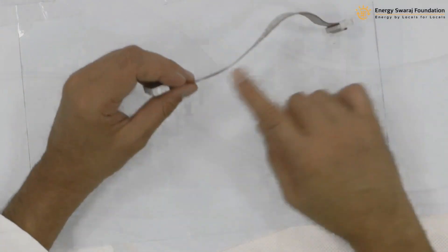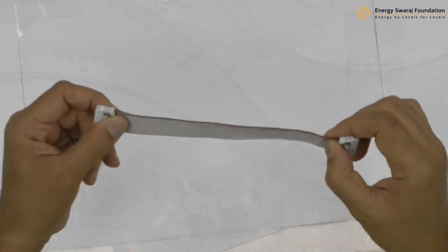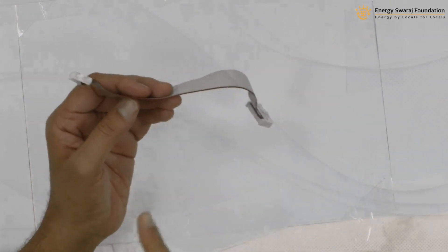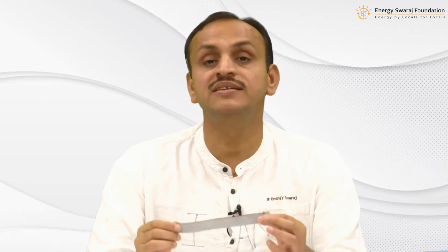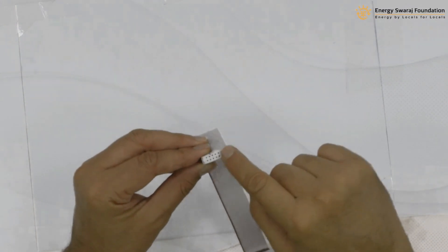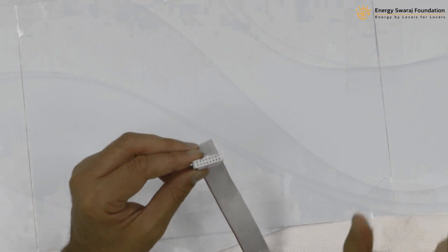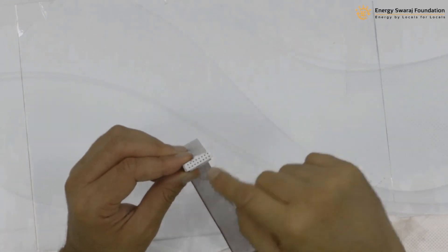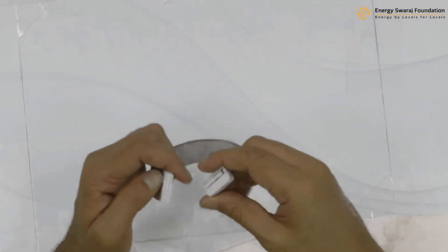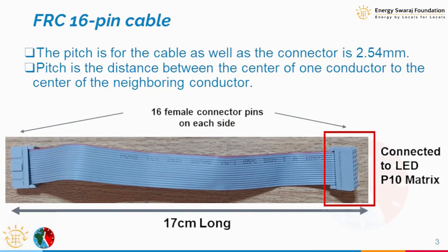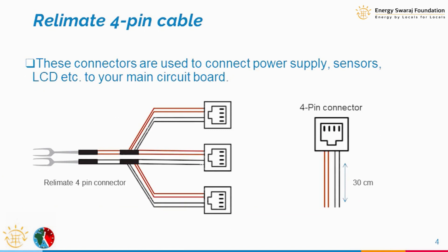We are going to need three FRC cables because there are three P10 displays. Data from P10 display 1 will go to P10 display 2, and from P10 display 2 it will go to P10 display 3, so each connection requires this cable. You can see the female side with 16 pins, and on the other side the controller also has 16 pins. The pitch of this cable is about 2.54 millimeters between pins, and the length is about 17 centimeters — good enough to connect between two P10 LED displays.